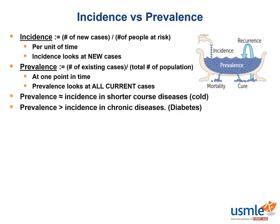Roughly speaking, prevalence is approximately equal to the incidence times the disease duration. Thus, for acute diseases like the common cold, prevalence is approximately equal to incidence because almost all cases are new cases. For chronic diseases like diabetes, the prevalence will be greater than the incidence because there are a large number of existing cases.